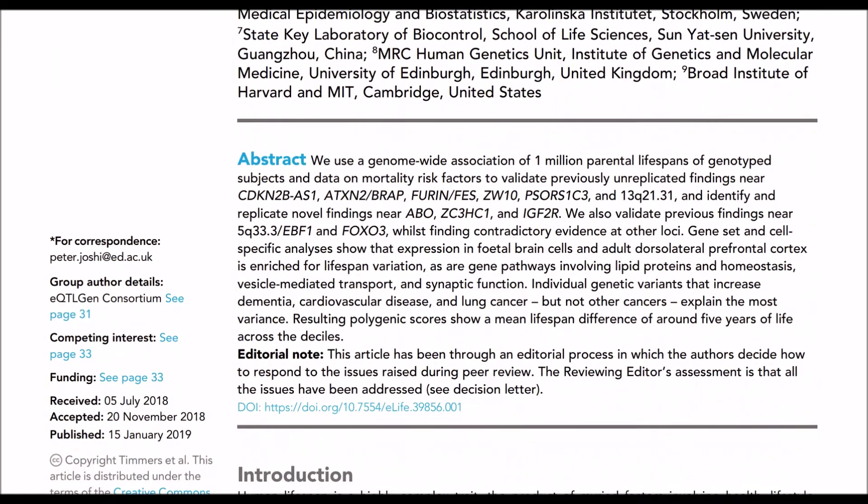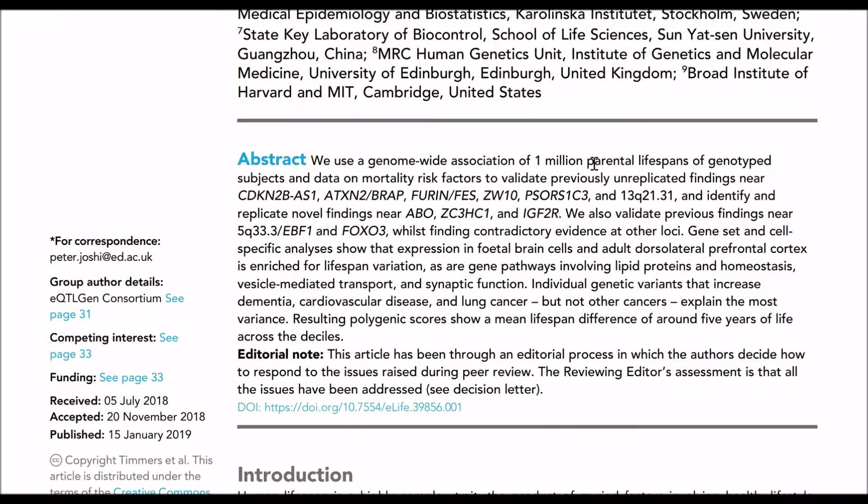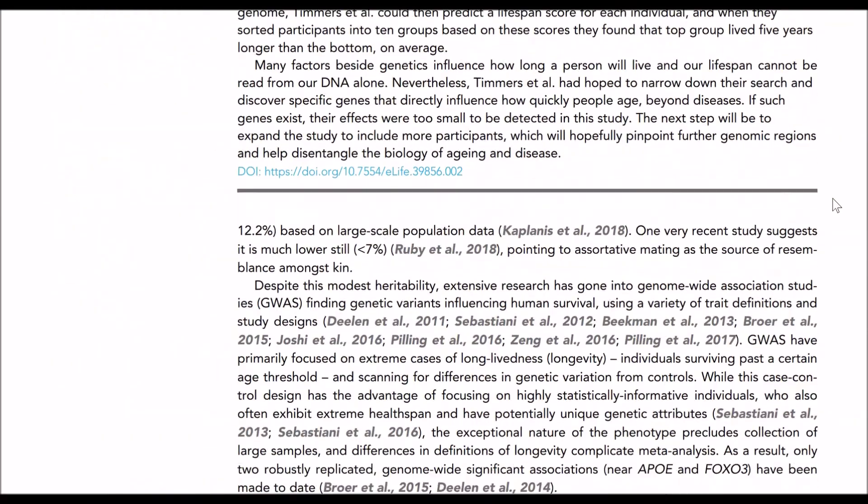So this recent study used the continuous method to look for genetic variants associated with aging. And they identified 12 different DNA regions that seem to affect lifespan. And if you go to this podcast here, you can listen to the authors explain about their research, which I recommend doing. But even though they found these 12 different variants, and I'll talk about a couple of them later on, there's still limitations to this approach.